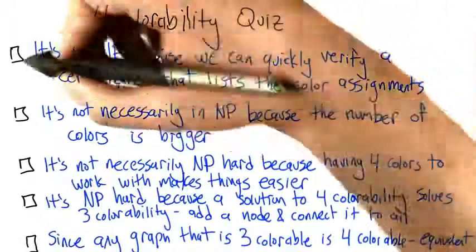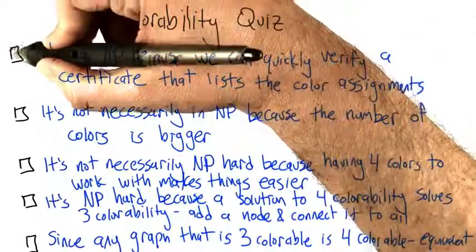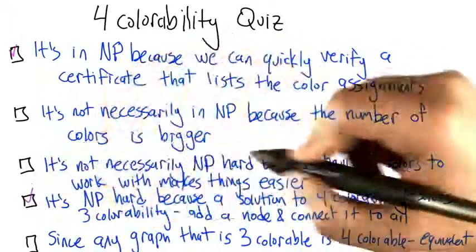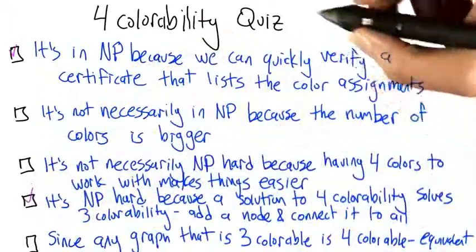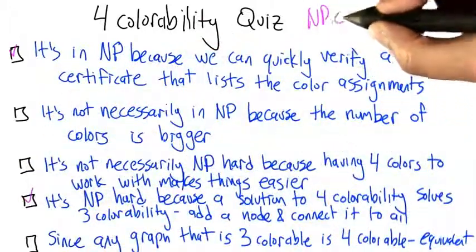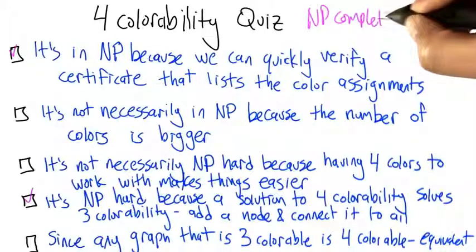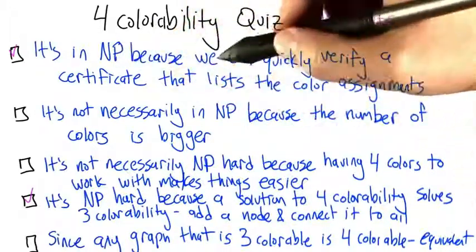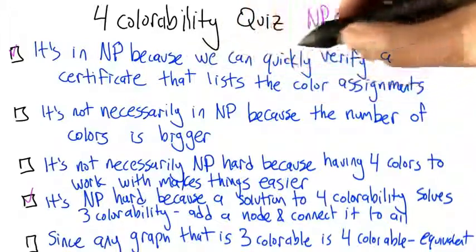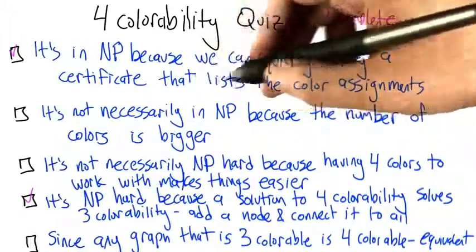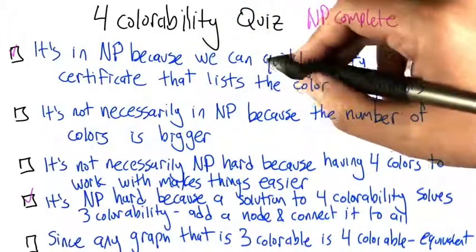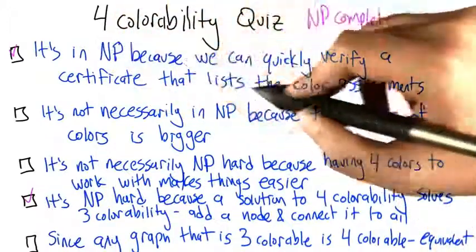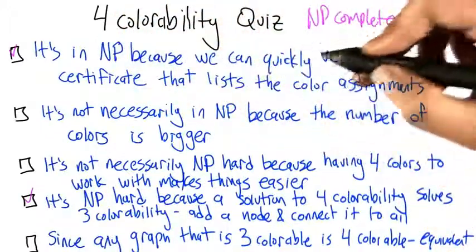The two choices are that it is in NP and it is NP-hard, so it is NP-complete. 4-colorability is NP-complete. This one's true — we can quickly verify a certificate that lists the color assignments. We actually did that in general already earlier in the unit. So 4-colorability is definitely in NP.